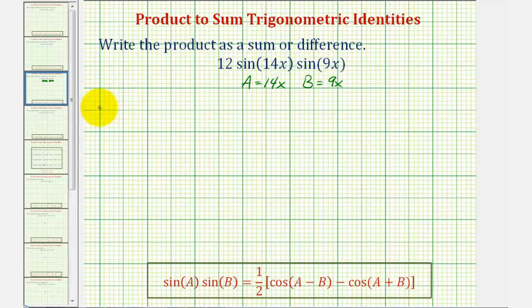So applying our identity, we can say that 12 times sine 14x times sine 9x is equal to 12 times one-half times the quantity cosine of A minus B. Well A minus B would be 14x minus 9x, that's 5x. Notice how we do have a positive coefficient, which is what we prefer. And then we have minus cosine of A plus B or 14x plus 9x, which is 23x.